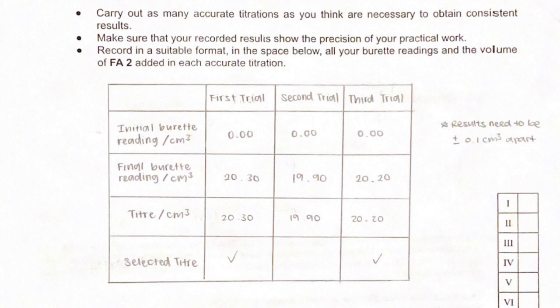And then, select your titration results that are 0.1 cm³ apart or have the smallest difference.